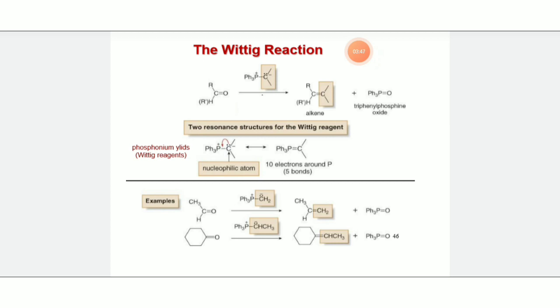Wittig reaction. This involves the treatment of aldehydes and ketones with phosphorus ylides to form alkenes. Carbonyl compounds react with triphenylphosphine ylide to form alkene molecules.